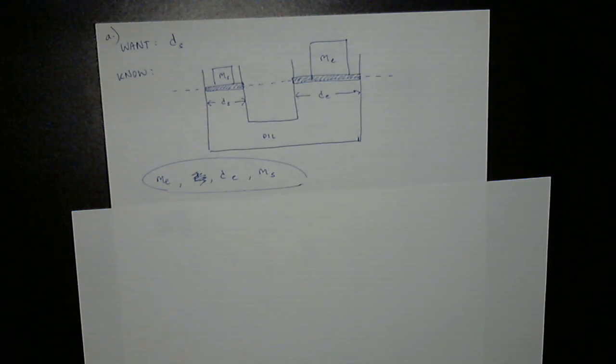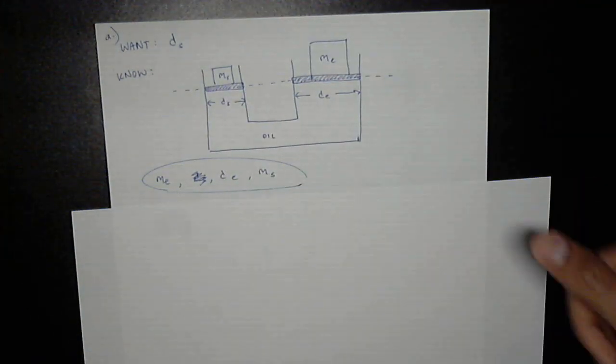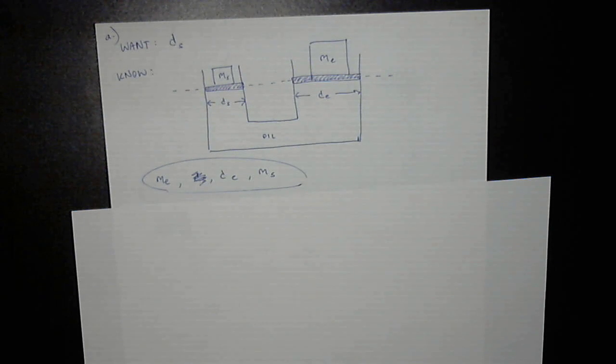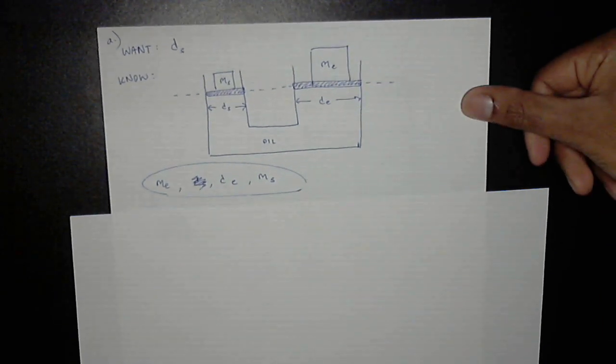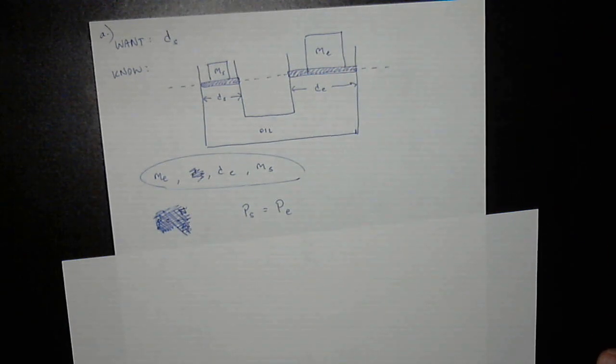But in reality, thanks to Pascal's law, we know that the pressure is actually going to be the same at both here and here because they're at the same height. So the pressure is the same everywhere, which allows us to make the statement. The pressure at the student is equal to the pressure at the elephant platform.